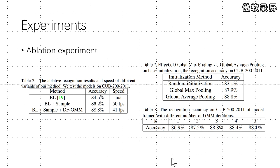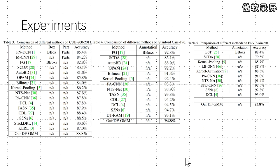Thus, it effectively improves the recognition accuracy. We show the recognition results with different iterative numbers of GMM as shown in Table 8. And as can be seen in Table 5, switching the pooling method from GAP to GMP leads to a significant performance drop.